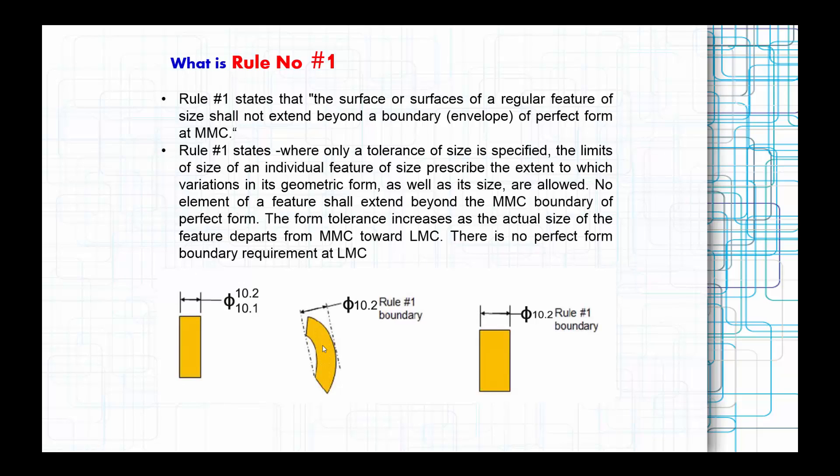Or the perfect form at MMC, it should fit within that envelope. No element of a feature shall extend beyond that MMC boundary at a perfect form. What happens is there is no perfect form boundary requirement at LMC because that is the lower material condition.